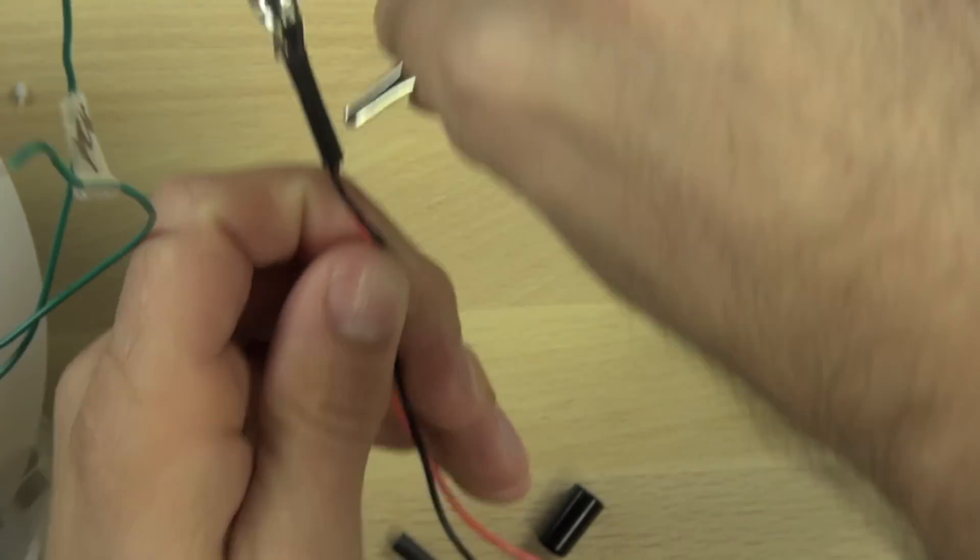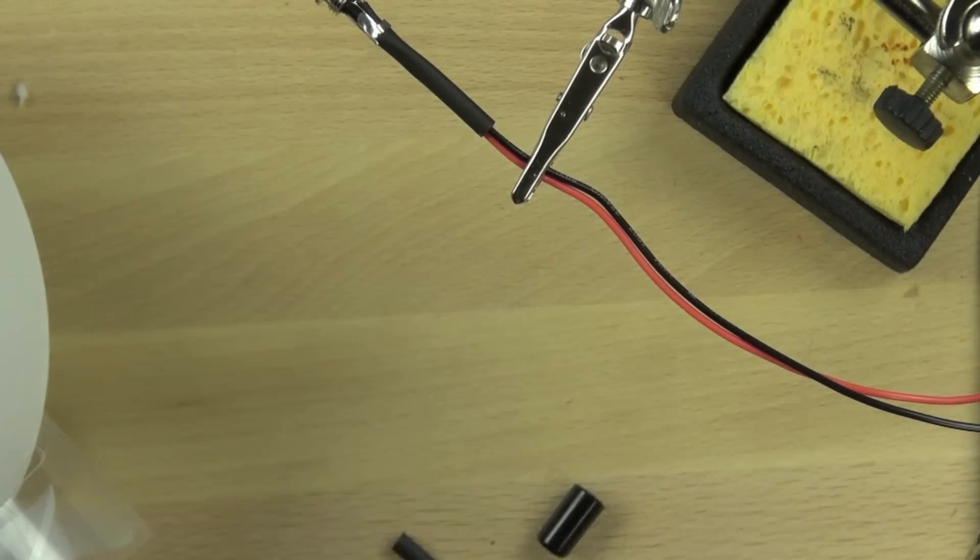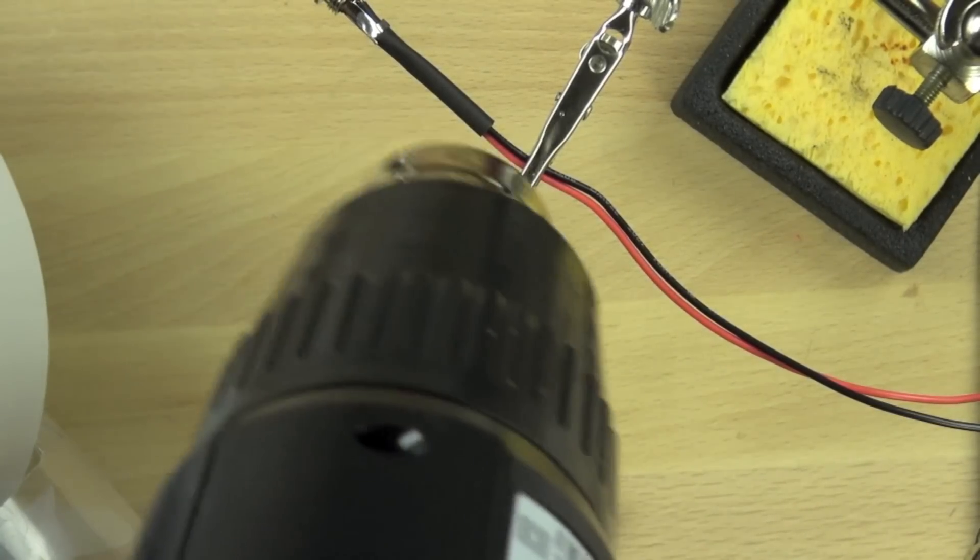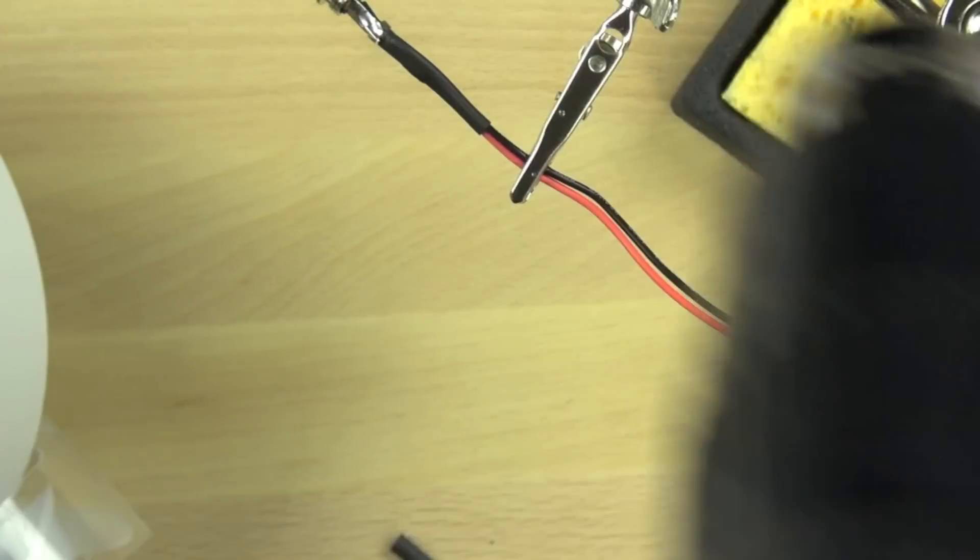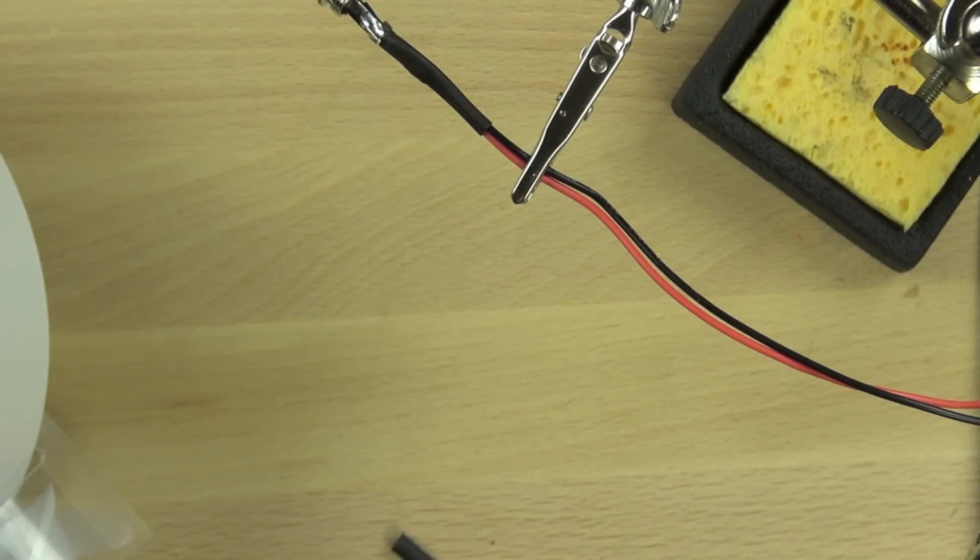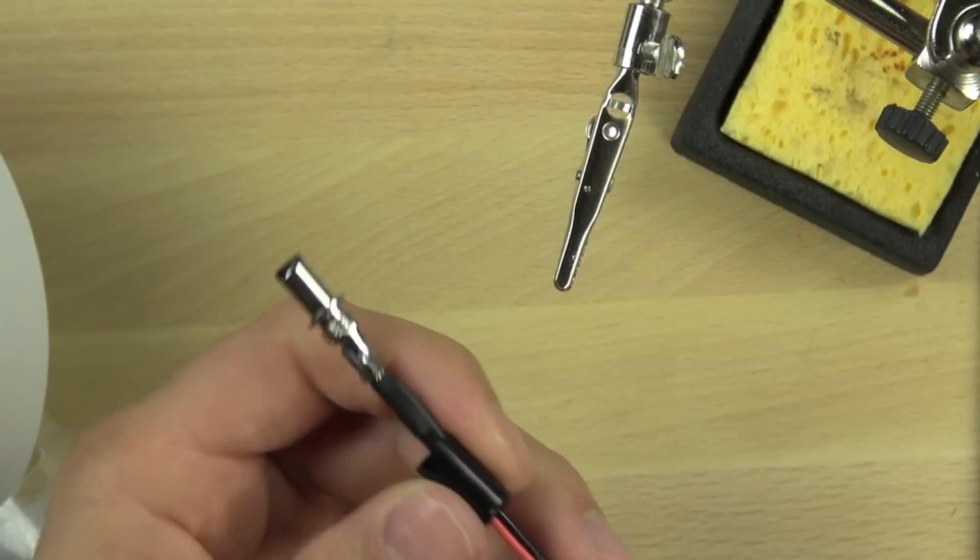Remember you want to make sure that the shrink wrap tubing is a pretty snug fit. We're heating it with our shrink wrap gun and it's all shrunk down now.